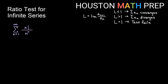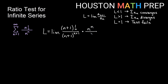For the next example, we have the sum from 1 to infinity of n! over n^n — factorial growth over super-exponential growth. Using the ratio test, the (n+1)th term is (n+1)! over (n+1)^(n+1), divided by the original, which becomes multiplied by n^n on top and n! on the bottom. Reducing the factorials, (n+1)! over n! leaves n+1, giving (n+1)·n^n over (n+1)^(n+1).